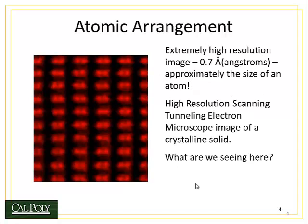Now that we have a definition for density, let's take a look at atomic arrangement. It turns out that atoms organize themselves in one of two ways: either in regular crystalline patterns or as amorphous materials. Amorphous means without shape — it's from the Greek. In a crystalline structure, the atoms are organized in a regular, predictable pattern. This is an image from a high-resolution scanning tunneling electron microscope of a crystalline solid, and what you're seeing are the electron clouds of the atoms organized into a crystalline pattern. This is one of the highest resolution images ever taken of a material.